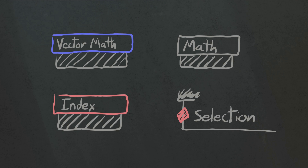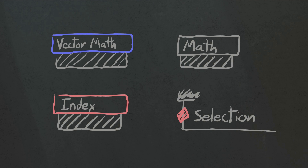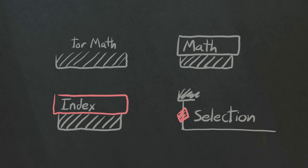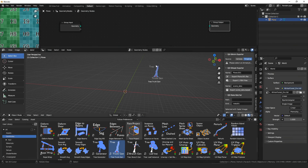In combination with the set position node and vector math, you can describe the relationship between different points — whether you're subtracting them from each other to get directions, or adding them together to offset things. Once you have that building block, it's just a matter of what input geometry you're feeding into it to transform it: curves, distributing points across faces, instancing objects on those points — all of that is different ways of inputting geometry into something you'll eventually want to transform, probably with a vector math node. There are a ton of other things you can do, but I'd say that's a key part of a lot of use cases for geometry nodes.